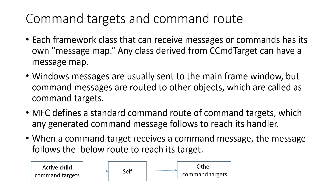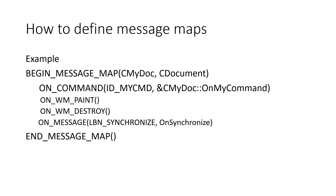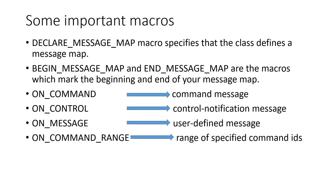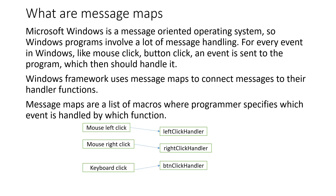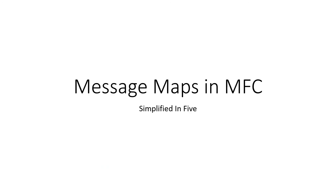To summarize, we saw five key things: command targets, an example of a message map, important macros, the message categories handled by message maps, and the basic details about message maps. Thanks for watching, and hope this helps.